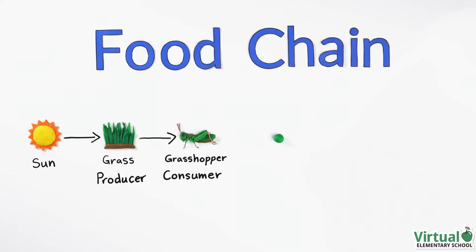The grasshopper is then eaten by a frog. So the energy in the grasshopper goes to the frog. The frog is also a consumer.